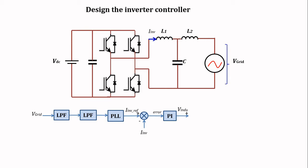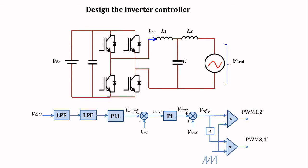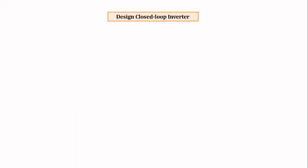The output of the PI controller is then added with the grid voltage, and that will generate the reference signal for PWM generation. Finally, the reference signal will be compared with a triangular carrier wave to generate the control signal for the IGBT to drive the inverter.